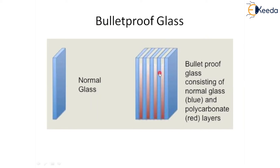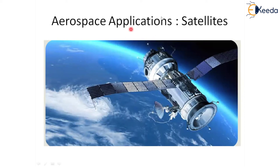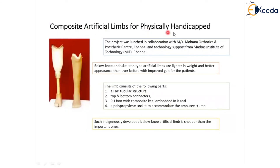Bulletproof glass is another application of composites — it consists of layers of glass and polycarbonate that together stop bullets. In aerospace, composite materials are used extensively in satellites and other systems. Composite materials are also used to make artificial limbs for physically handicapped people. Advanced 3D printing techniques now allow customized limbs — such as knees and other parts — to be manufactured based on individual requirements.